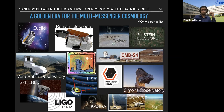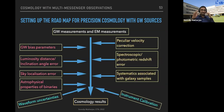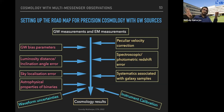This is a very exciting time to explore standard science goals and potentially discover surprising new science. However, the roadmap from gravitational wave measurements to precision cosmology will be really tough — there are numerous systematic effects to control, many of which we can already anticipate: gravitational wave bias parameters, astrophysical properties of binaries, luminosity distance–inclination angle degeneracy, sky localization errors. On the EM side: peculiar velocity corrections, photometric redshift errors, and spectroscopic survey systematics. All of these must be carefully mitigated.